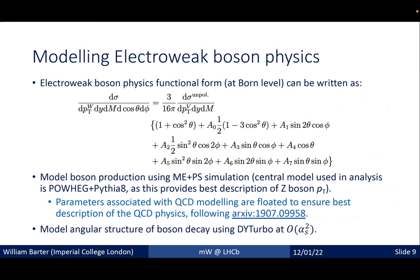For electroweak physics modeling, the functional form at Born level has three degrees of freedom for boson production — p_T, rapidity, and mass — plus two additional degrees of freedom for the direction of the decay. We model boson production using matrix element plus parton shower simulation; the central model is Powheg plus Pythia, which provides the best description of the Z boson p_T. We also float various QCD modeling parameters within our fits, and model the angular structure of the decay using DYTurbo at order alpha_s squared.